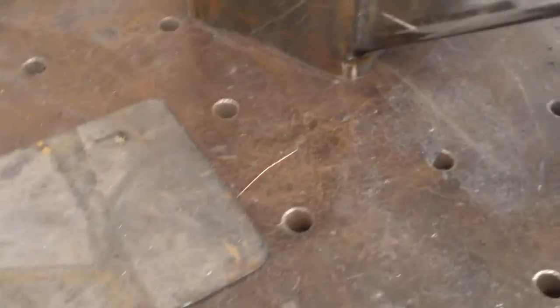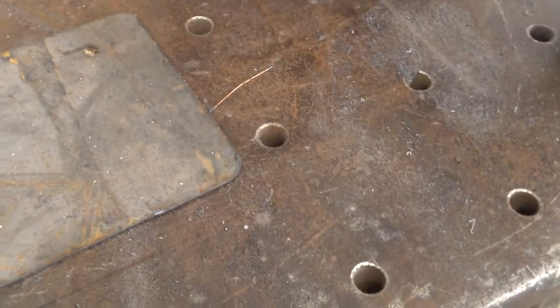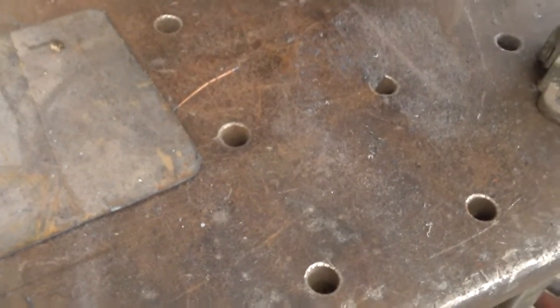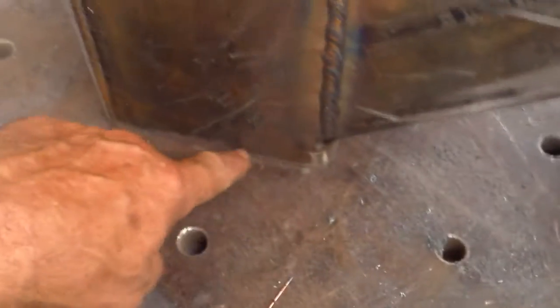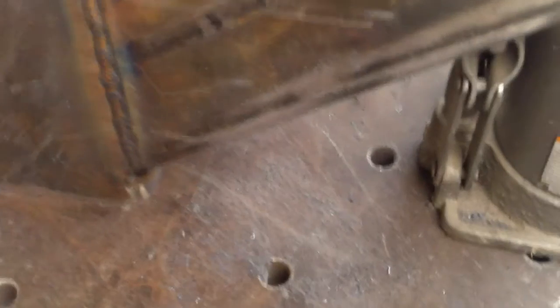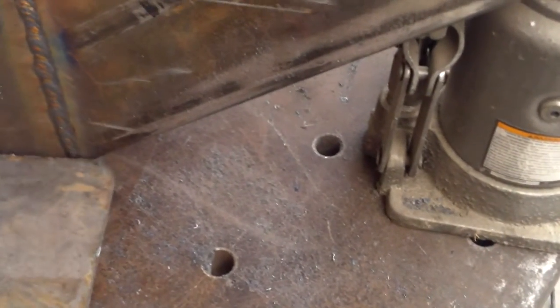Anyway, the next step here is get some one inch angle iron, and I need to cut three pieces for the bottom here. And then this little piece will hold the ash door on.